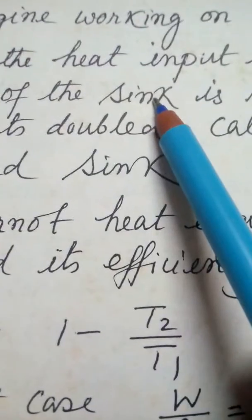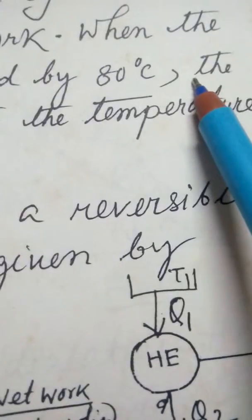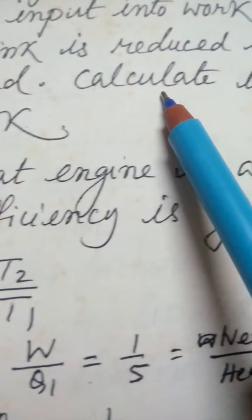the sink is reduced by 80 degrees centigrade, the efficiency gets doubled. Calculate the temperatures of source and sink. The Carnot solution,